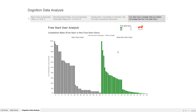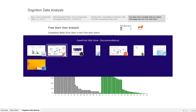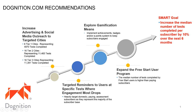To recap our recommendations: increase advertising and social media outreach to targeted cities, send targeted reminders to users at specific tests where engagement is dropping, explore gamification means, and expand the FreeStart user program. That will get us to our SMART goal of increasing median tests per subscriber by 10% over the next six months. Thank you for listening — my name is Anthony Smoke, and happy Tableau-ing.